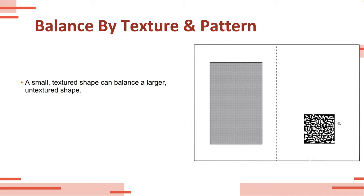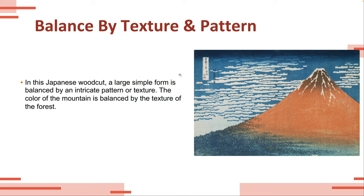A smaller textured pattern can balance a larger, untextured shape — even though this object is much smaller, it carries a similar visual weight compared to a heavier, more flat shape. And then all these principles are in use in this Japanese woodcut. This large mountain is relatively simple with not as much texture, but this larger, less-textured object is balanced by the texture in the forest and the texture in the clouds and sky. Even though the forest is significantly smaller than the mountain, it has a lot more texture, so it carries more visual weight and visual interest.